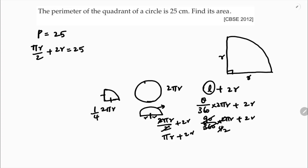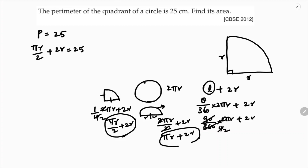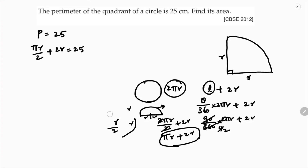So the perimeter of a quadrant is (1/4) × 2πr + 2r = πr/2 + 2r. To compare: perimeter of a circle is 2πr, perimeter of a semicircle is πr + 2r, and perimeter of a quadrant is πr/2 + 2r.